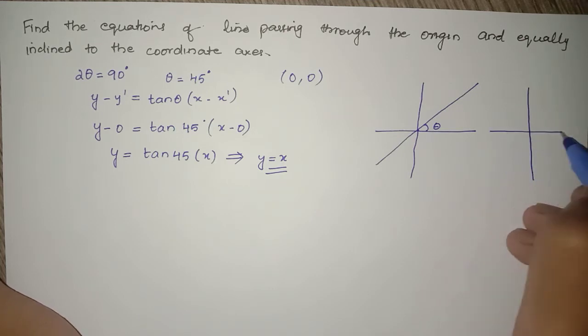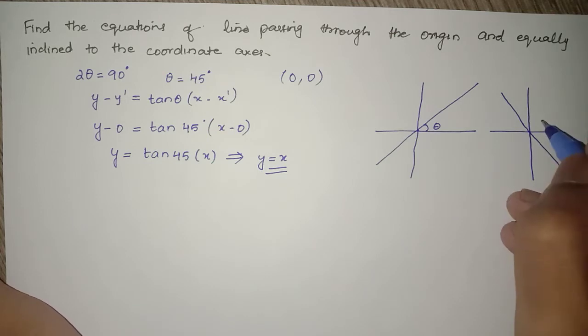The second line also passes through the origin like this. This will be equal to 90° + 45°, which is 135°.